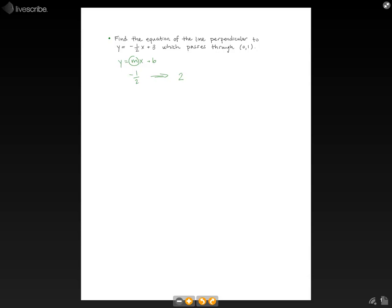So, we can write the equation of our new line. We don't know the y-intercept yet, so we're just going to write y equals 2x plus b. And now we need to solve for b.